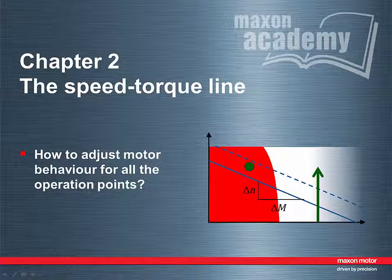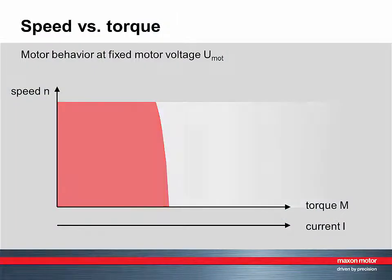In this chapter 2, we address the question of how the motor behaves and how the behavior can be described and adjusted to the required motor operation. For the moment, let's put the operating range and limitations in the background.